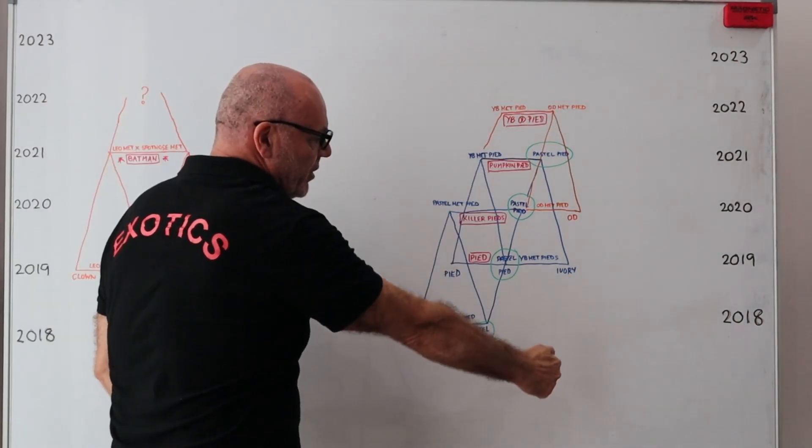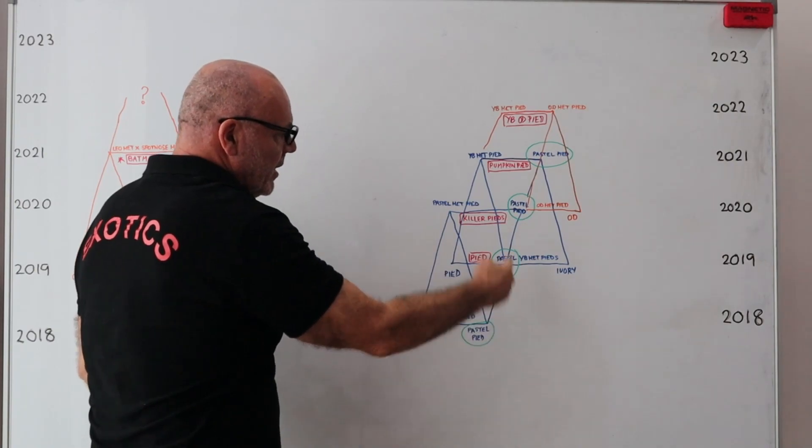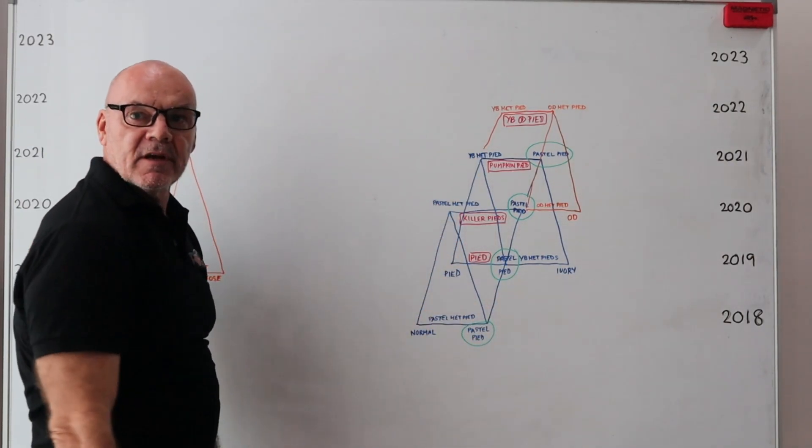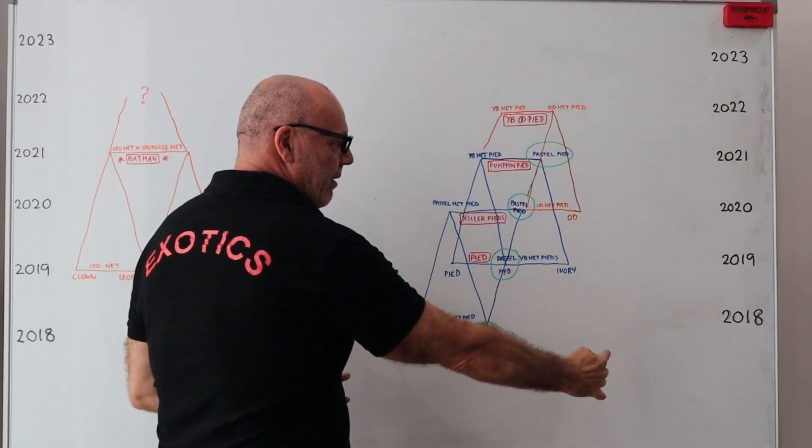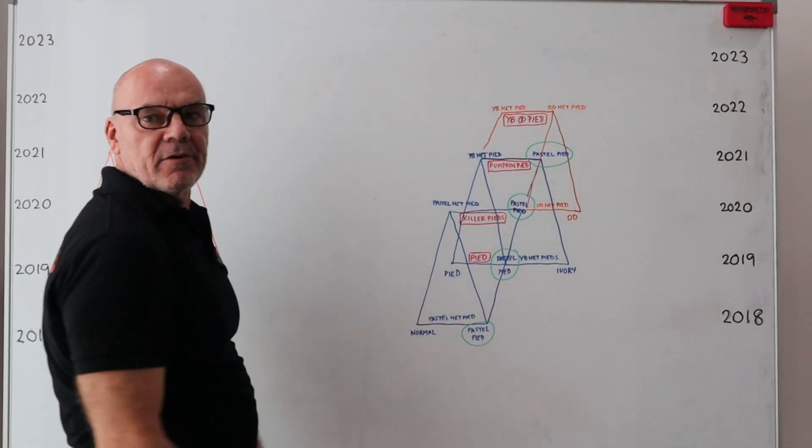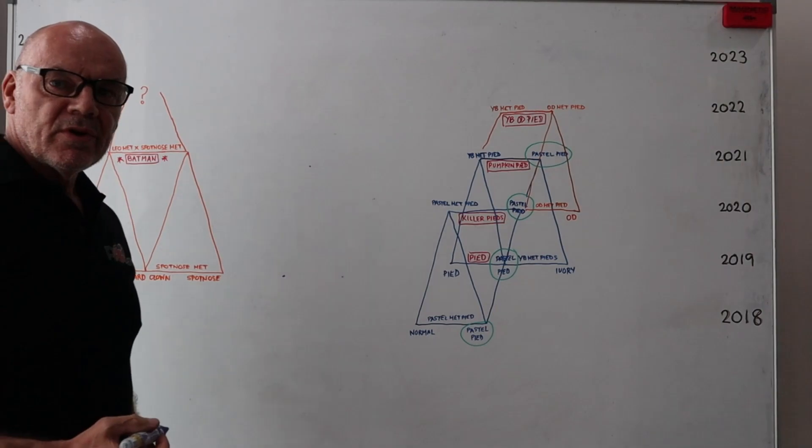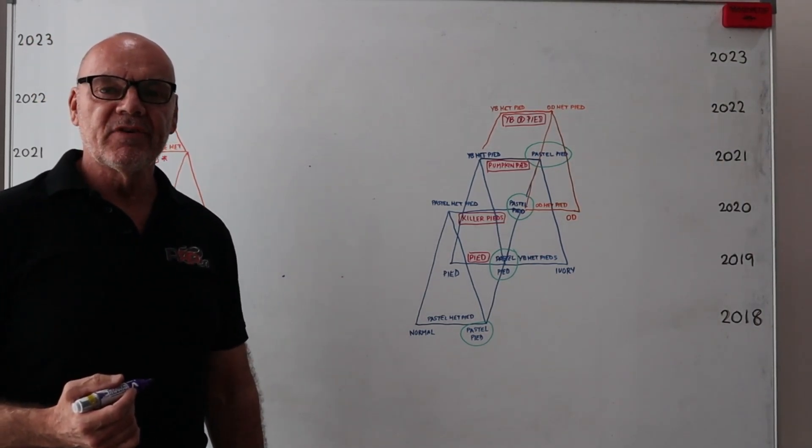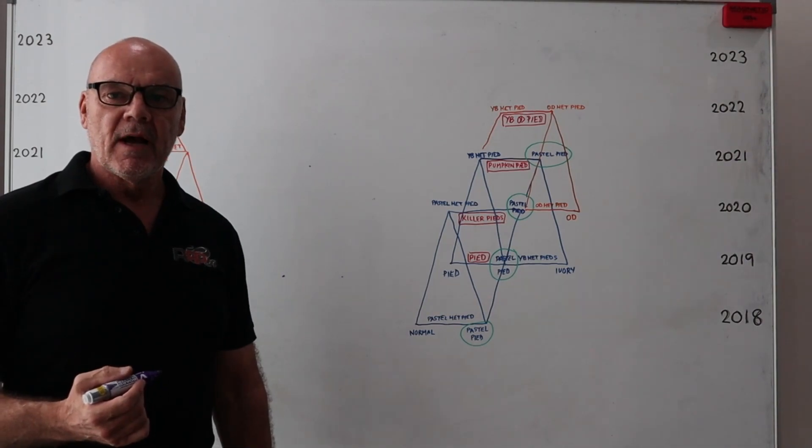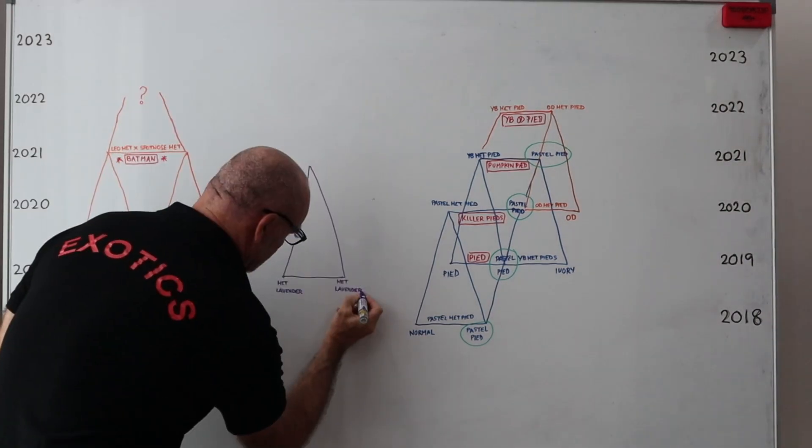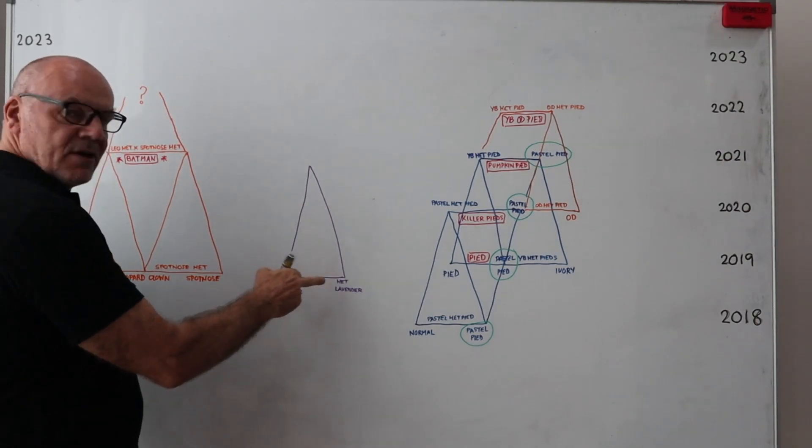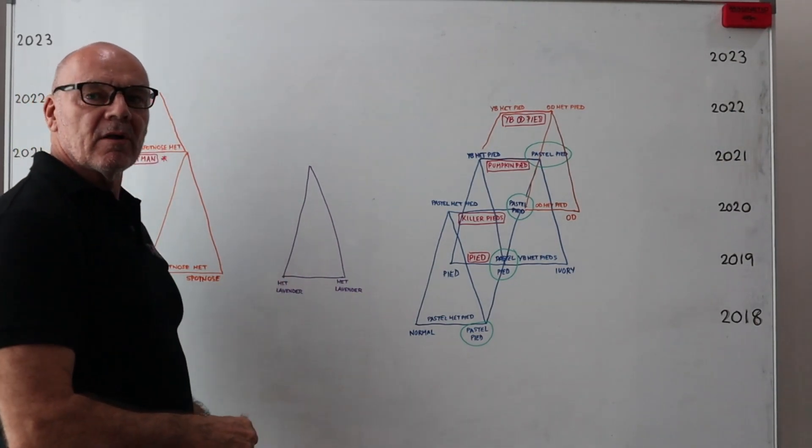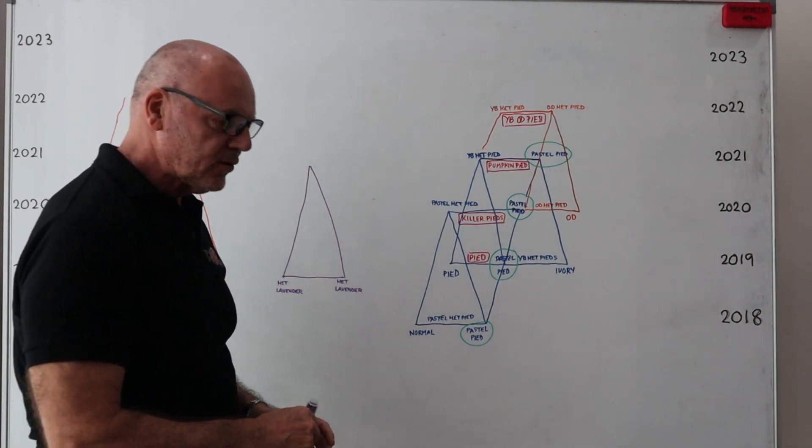By 2022 I've got yellow belly het pieds, I've got orange dream het pieds. I can mix the two and produce yellow belly orange dream pieds, which is another milestone. So at this point in the video I'm going to show you two snakes. I'm not going to tell you what they are, but they slot into my project scope quite nicely. So the yellow belly het pieds that we used originally in 2021 would be used again in 2022 when the orange dream het pieds are ready, with a goal of yellow belly orange dream pieds.